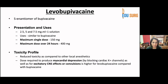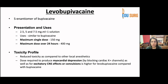Levobupivacaine is the S-enantiomer of bupivacaine. There is a lot of isomerism present in anesthesia and many other drugs also have such enantiomers. It is available in 2.5, 5, and 7.5 mg per ml. Uses are very similar to bupivacaine. The maximum single dose is 150 mg and dose over 24 hours is 400 mg. It has comparatively less toxicity — lower myocardial depression as well as neurological toxicity — which is much improved compared to bupivacaine.